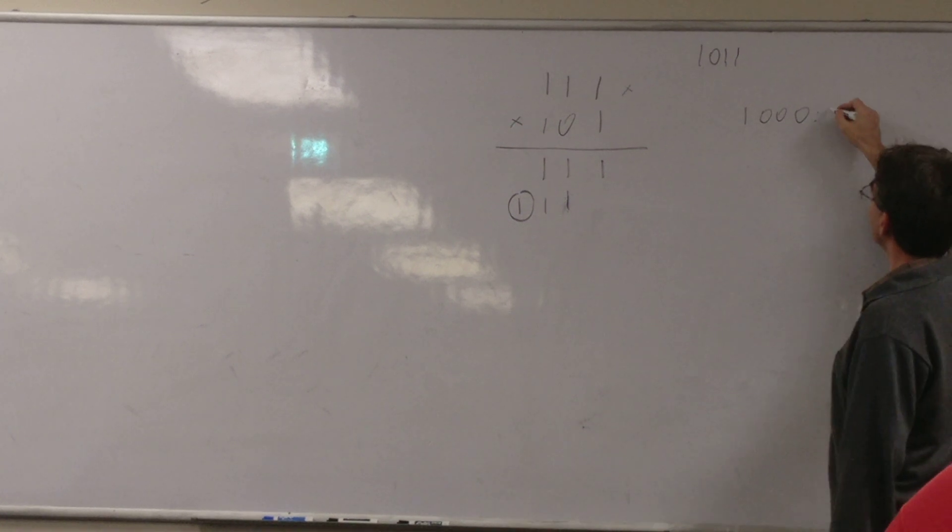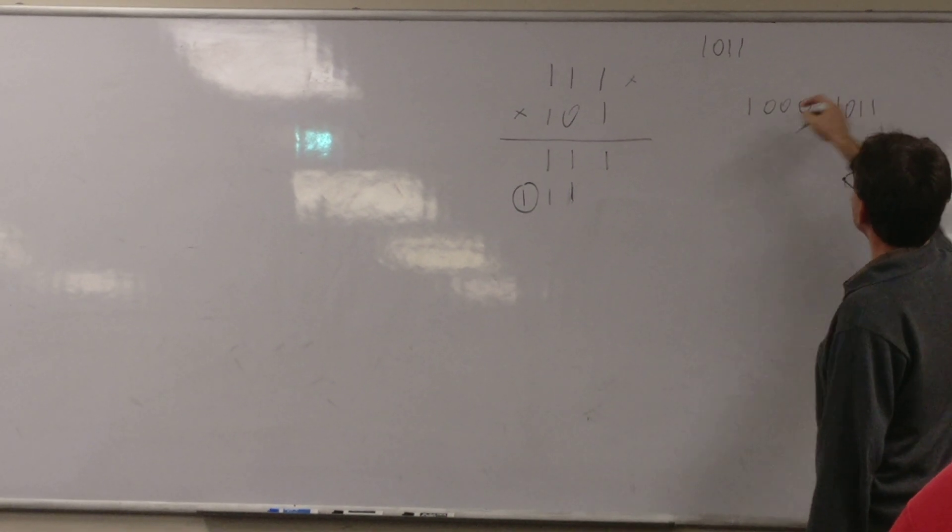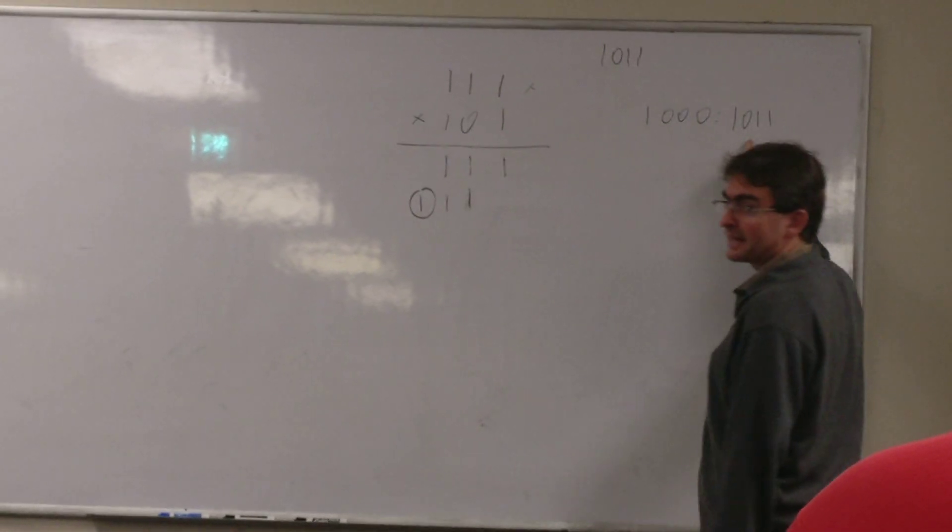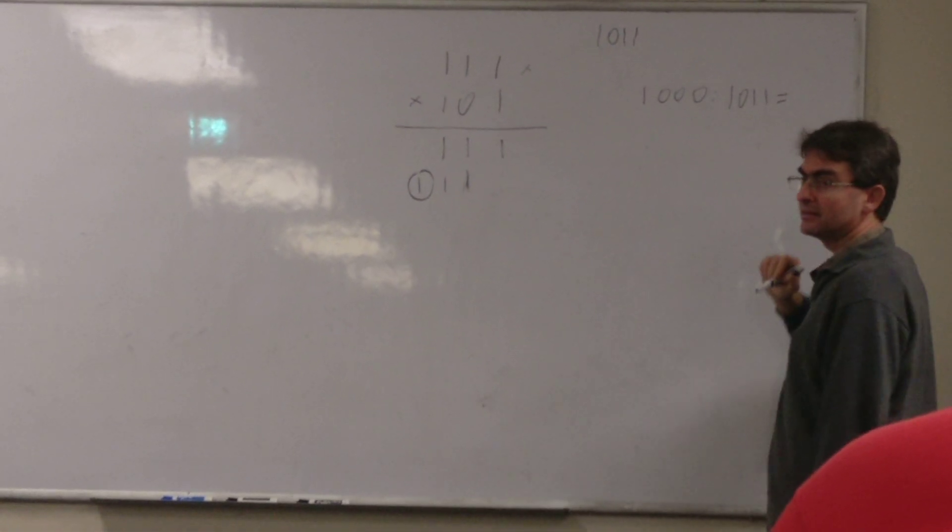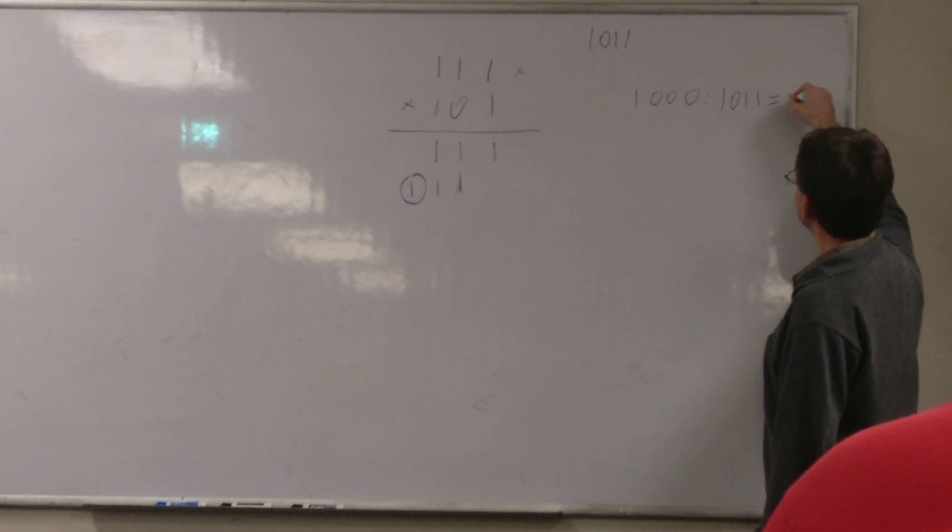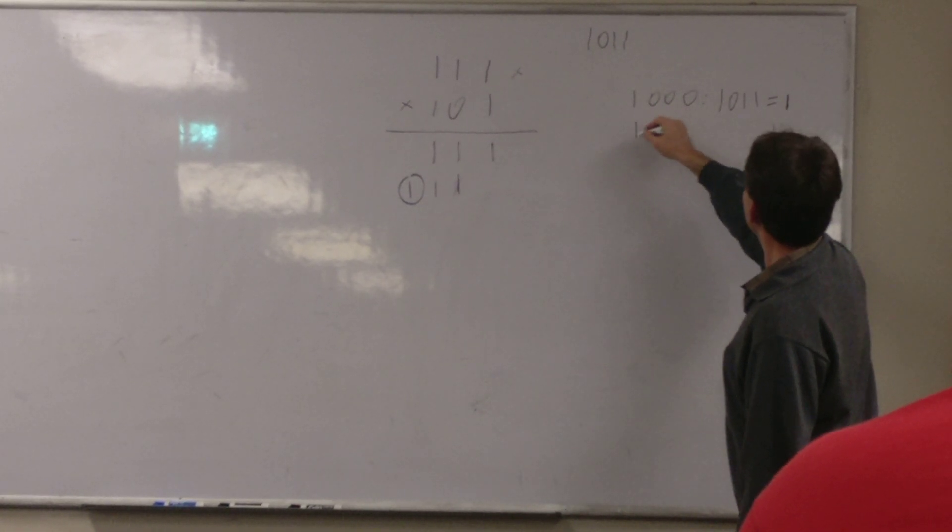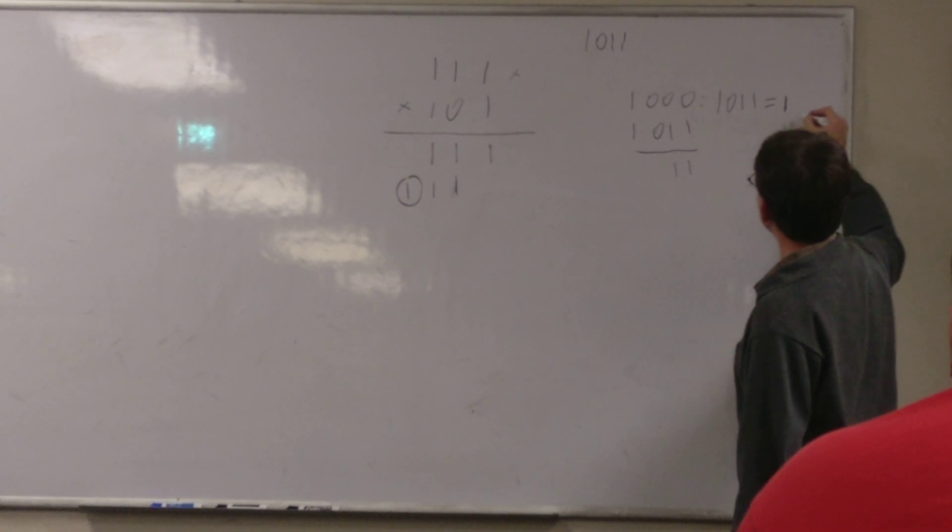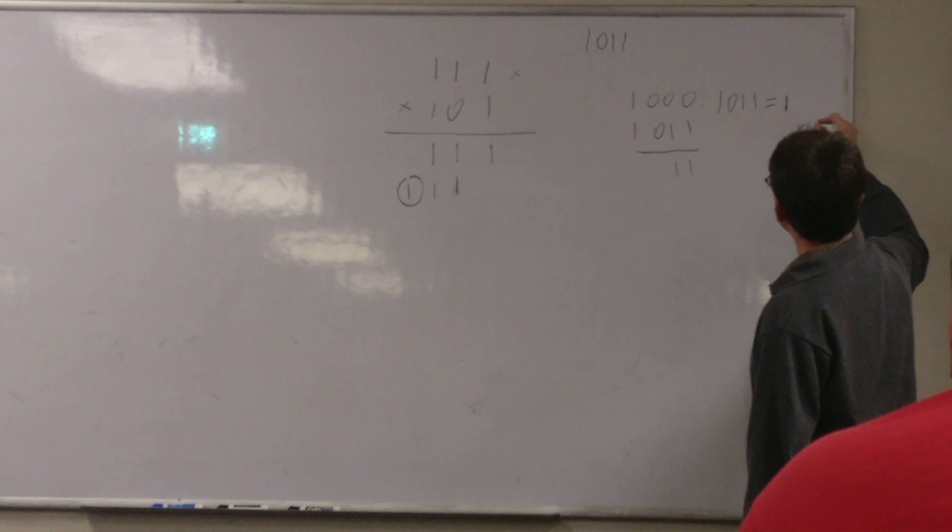x cubed divided by x cubed plus x plus 1 is going to be equal with, well this one enters once there, x squared. And you get x squared plus x plus 1. And the reminder is 1.